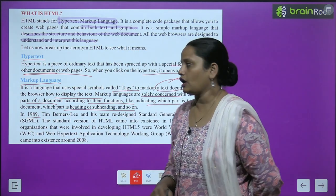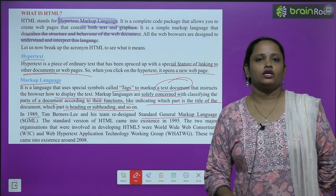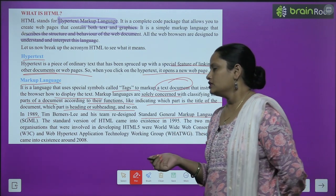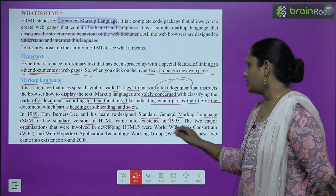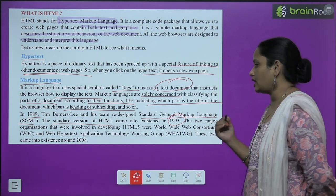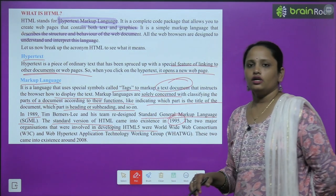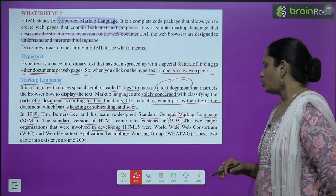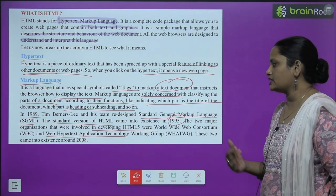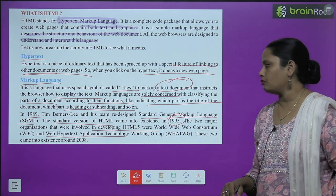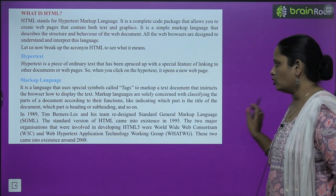In 1989, Tim Berners-Lee and his team redesigned Standard General Markup Language (SGML). The standard version of HTML came into existence in 1995. The two major organizations involved in developing HTML5 were the World Wide Web Consortium and the World Web Hypertext Application Technology Working Group. These two came into existence around 2008.